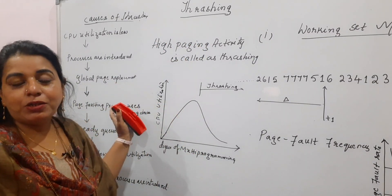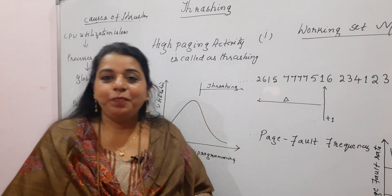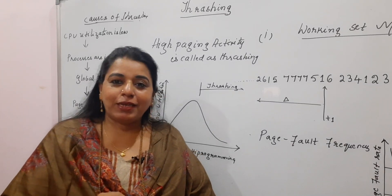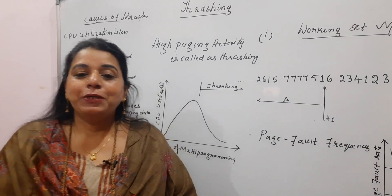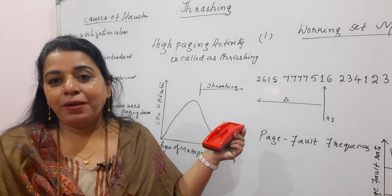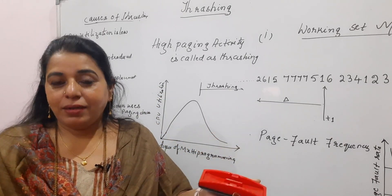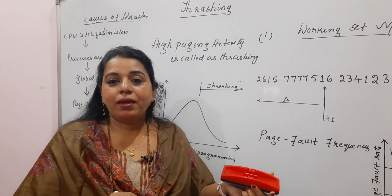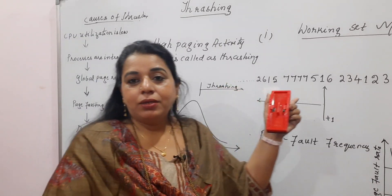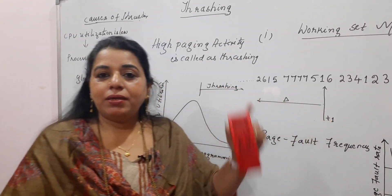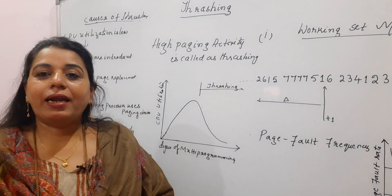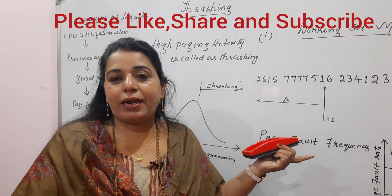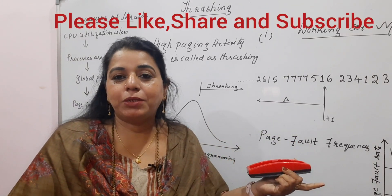Now you have understood thrashing. Wherever there is a problem in computers, there should be a solution. There are actually two major methods to solve thrashing. I will stop this session here and continue with the different solutions — how to overcome this problem and what the different methods are — in the next session.